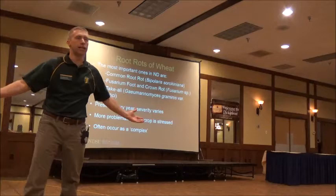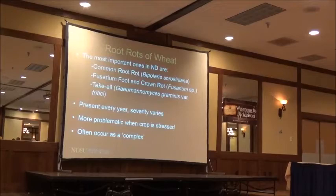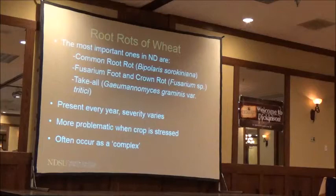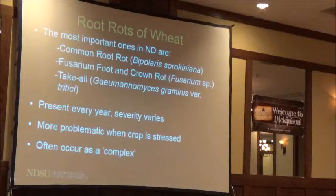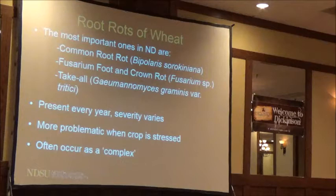The first category I'll look at is root rots of wheat. I'm going to focus on management and take-home messages. With root rots, we have three major ones: common root rot, Fusarium crown rot, and take-all. All of these can be found to varying extents depending on what area of the state you are in. As of late, there's been more Fusarium crown rot. They're probably present every year—sometimes you notice it, sometimes you really do. It's sporadic.